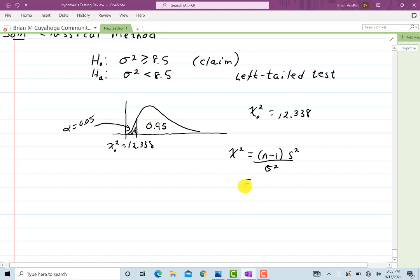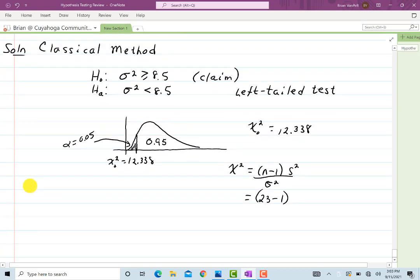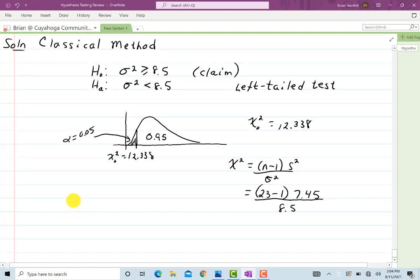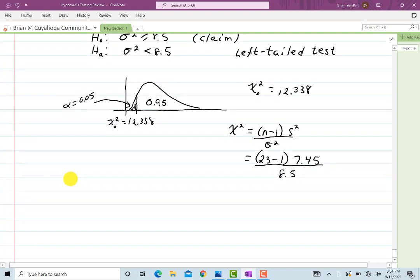Chi squared equals n minus 1 s squared over sigma squared. n was 23, so we have 23 minus 1, s the sample standard deviation was 7.45. It's 7.45 squared, actually, the sample variance. And the proposed population variance is 8.5. So I don't have to square these. They were already squared before I did this. And for this, I'll get about 19.282. And let's see where that falls at. This is actually outside of the shaded region, so that means we fail to reject H naught.